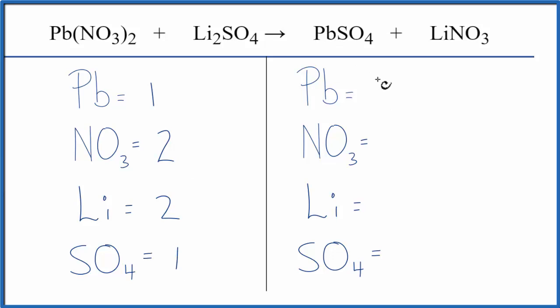On the product side, we have 1 Pb, 1 nitrate, 1 lithium, and the SO₄, that's sulfate, 1 of those.